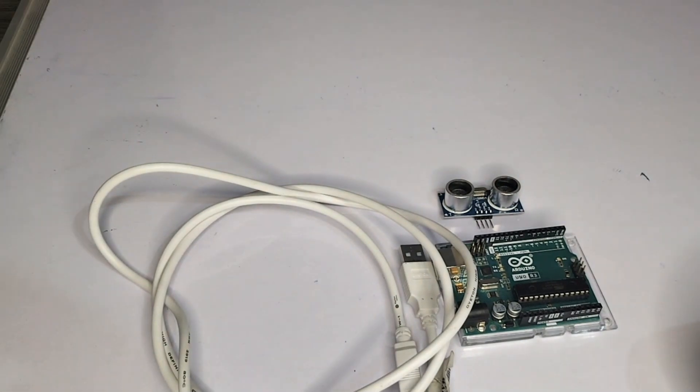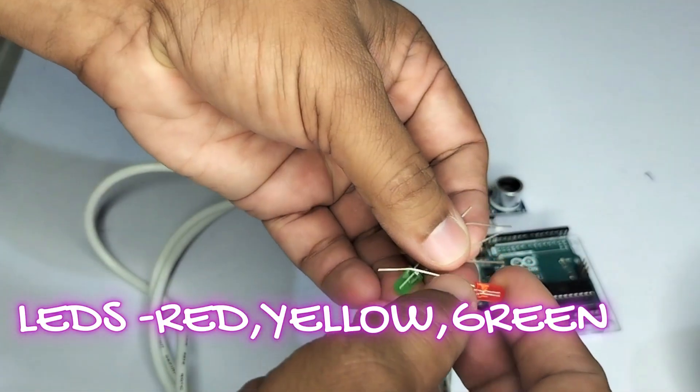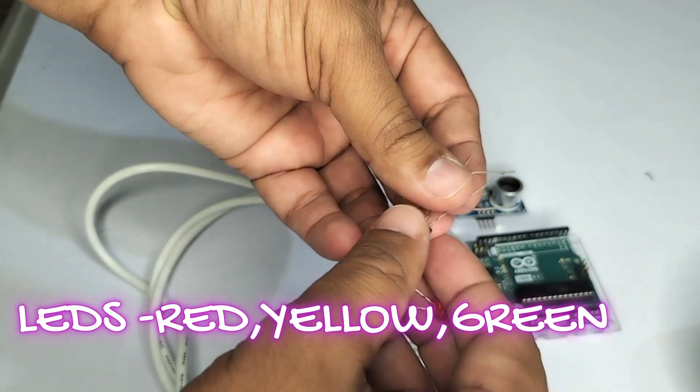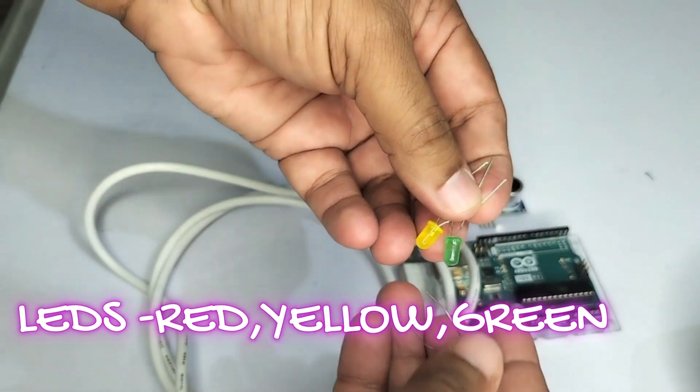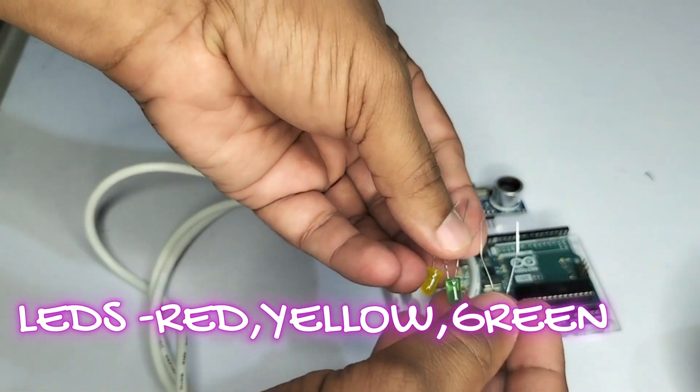So this is the one. Now we are identifying the obstacles in three ranges: whether the obstacle is there in a red zone, a yellow zone, or a green zone. For this one, I am taking three LEDs.